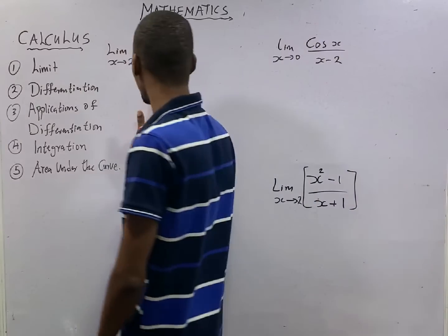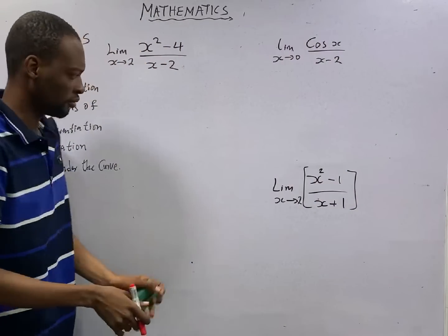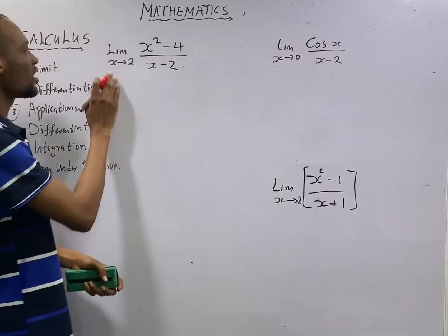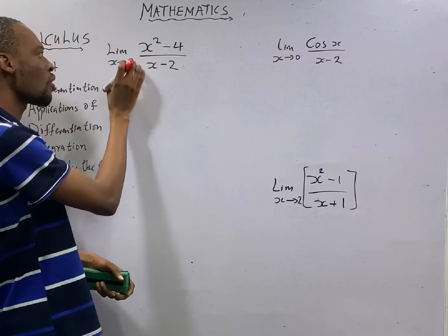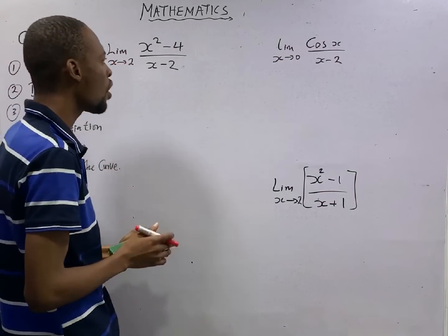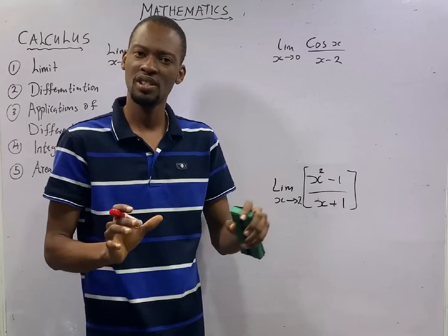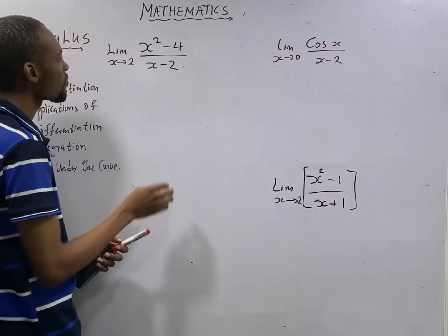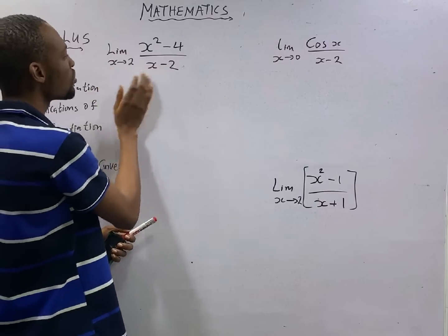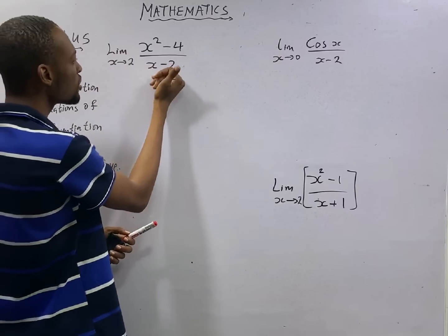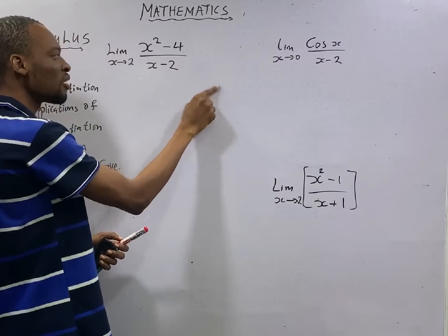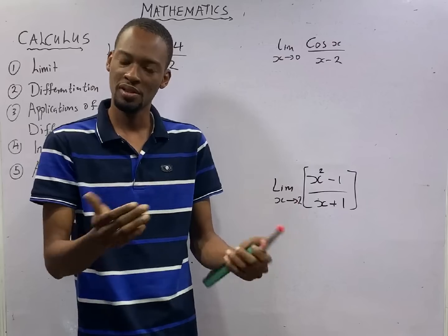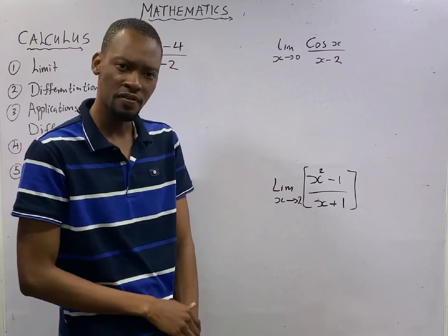Now look at this question. We are told to find the limit of this function as s approaches 2 or as s tends to 2. What is the limit of this function? Obviously, if you substitute s to be 2, you have seen that the denominator will already give you 0, and you get an undefined answer. So direct substitution is not an option. We simplify it.